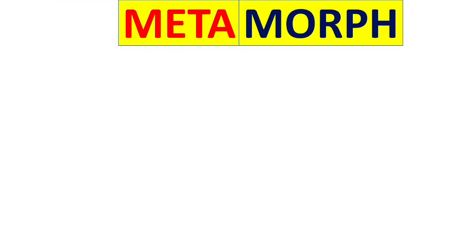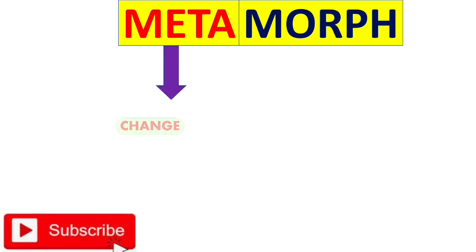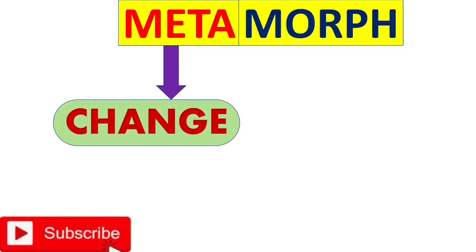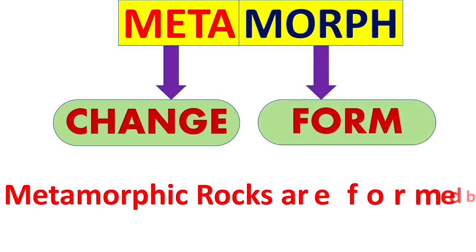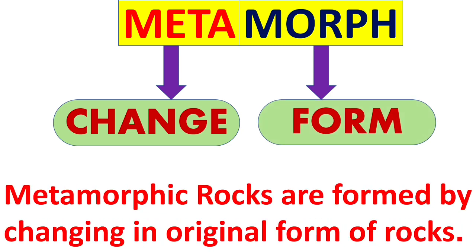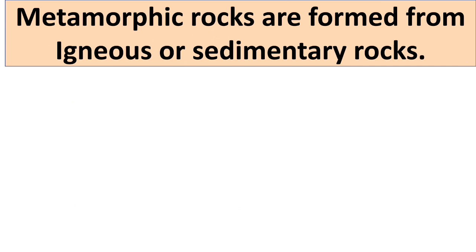Metamorphic rocks — from the name, 'meta' means change and 'morph' means form. So we can say metamorphic rocks are formed by a change in the original form of rocks. Metamorphic rocks are formed from igneous or sedimentary rocks.